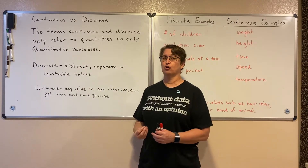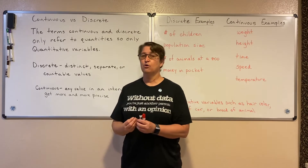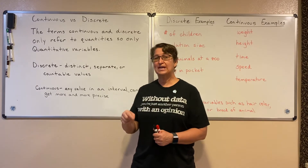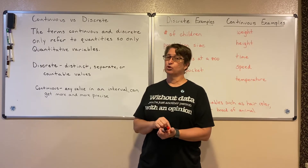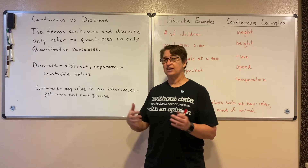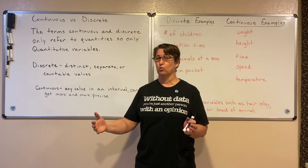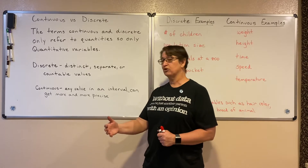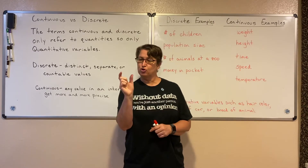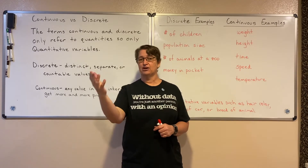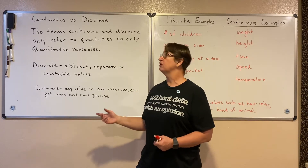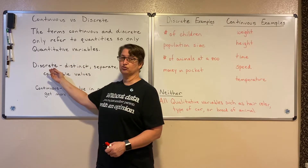So once we've decided that it's a quantitative variable, we can categorize it as either discrete or continuous. Discrete variables are those where our data is countable — each number is distinct or separate, and we can actually count in order to record our data. Whereas continuous data takes on a range; it can be any value within an interval, or you can think of it as being measured more and more precisely. If you give me two numbers, I can find something in our population that falls in between those two measurements.